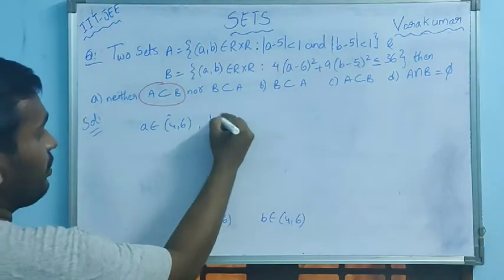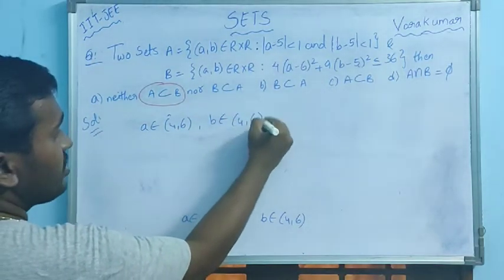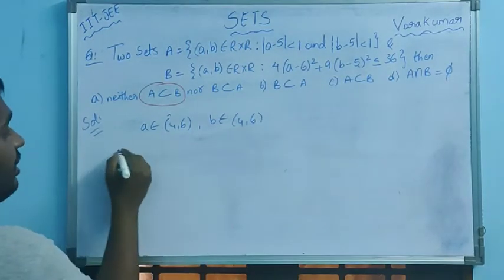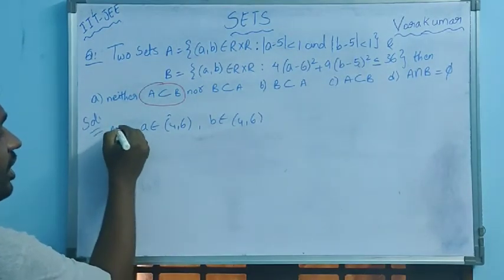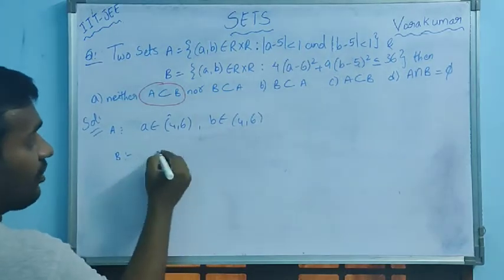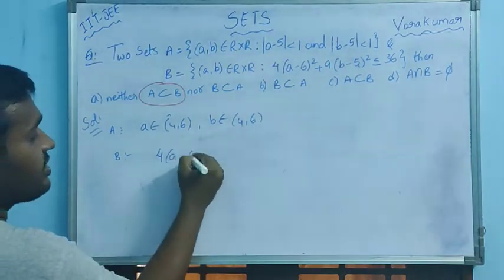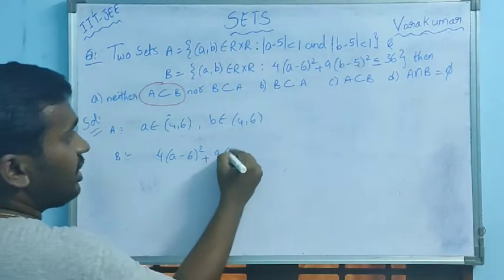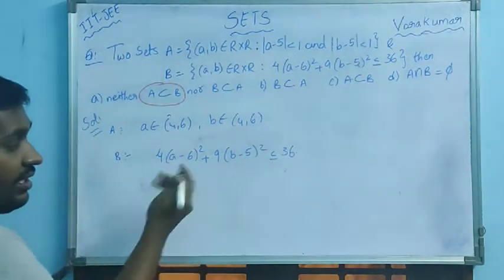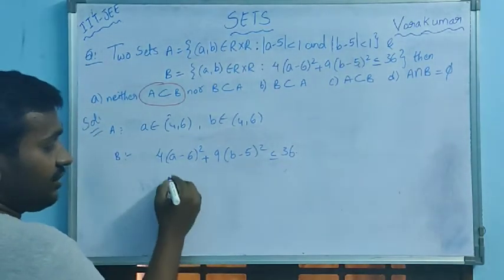And next one, set B is equal to... this is from set A we got it. Set B is equal to what we have: 4(a-6)² plus 9(b-5)² less than or equal to 36. Divided into 36 we will get (a-6)²...